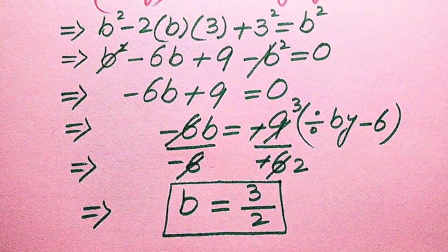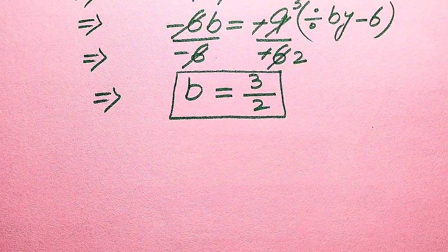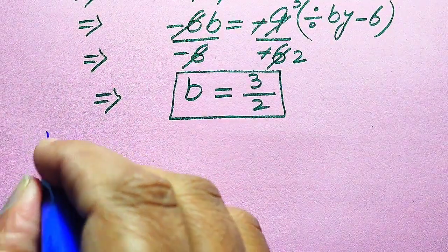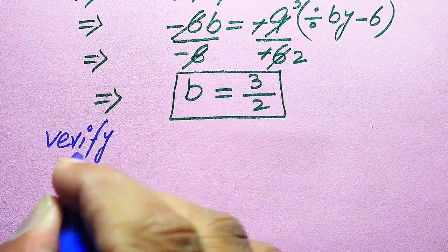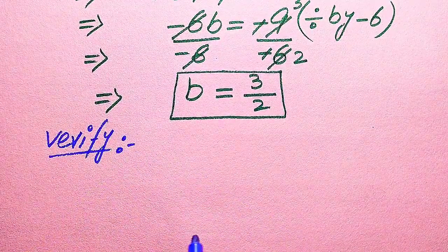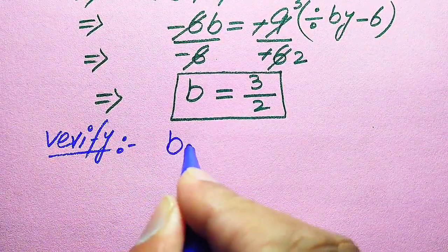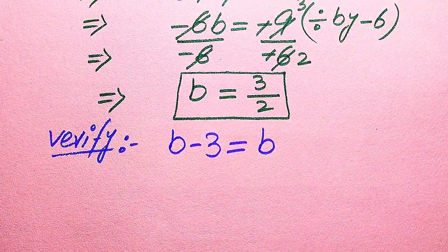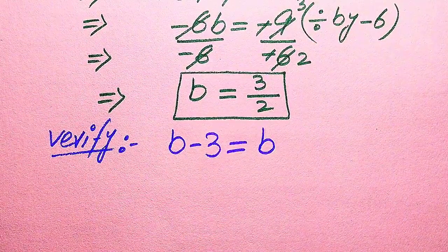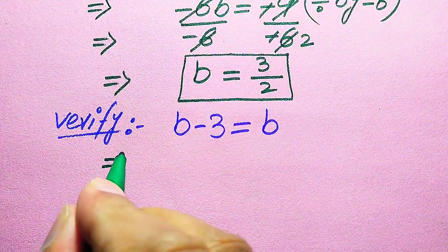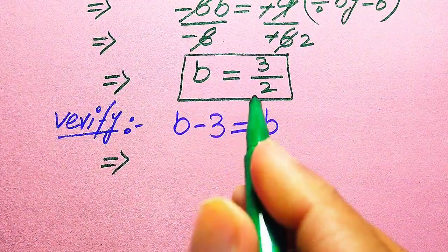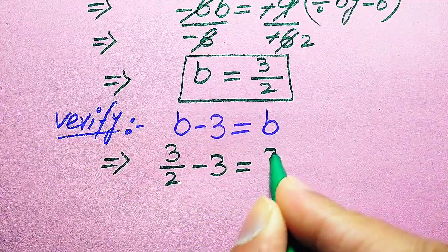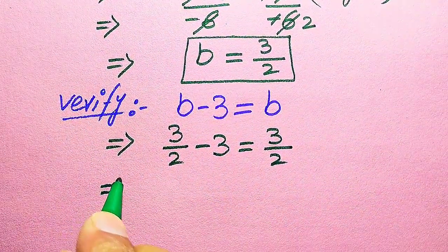So b = 3/2 is the first root of the given equation from this method. Now in the next step we need to verify whether this value of b satisfies our given equation or not. For verification, we copy down the given equation: √(b − 3) = b, and substitute b = 3/2 into both sides.